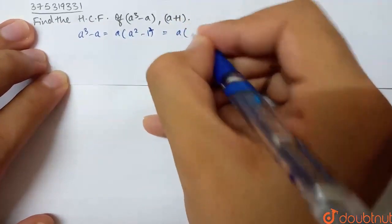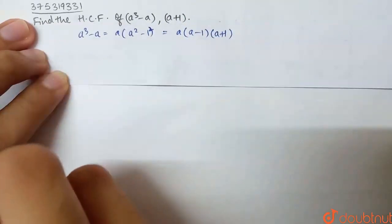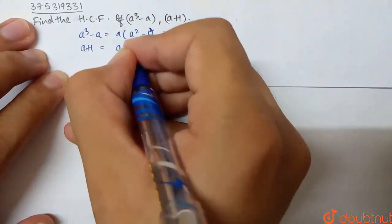So, what is a basically? a into (a-1) into (a+1), where b here is 1. And what are the factors of a+1? Basically, a+1 is itself.